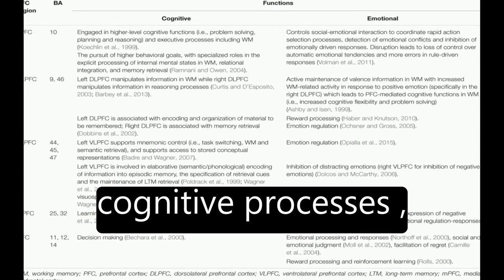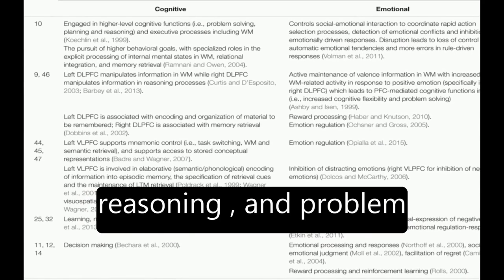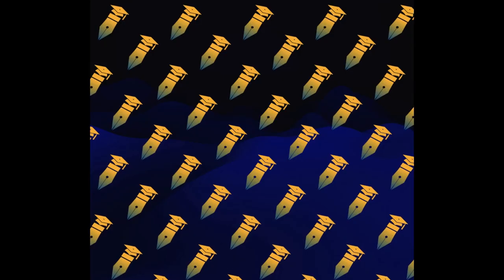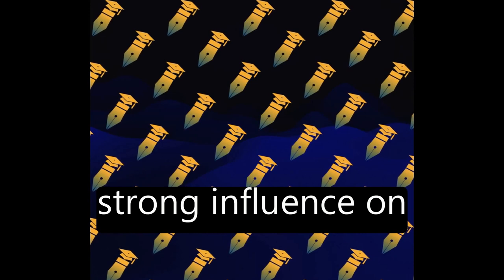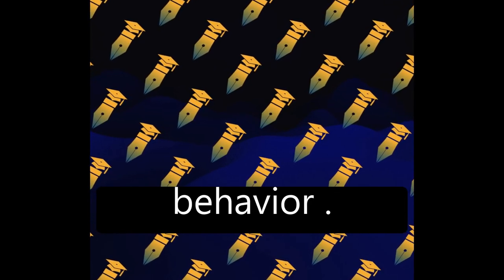Emotion plays a significant role in cognitive processes, including attention, learning, memory, reasoning, and problem-solving. It has a particularly strong influence on attention, modulating selectivity of attention and motivating action and behavior.